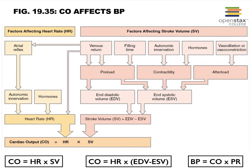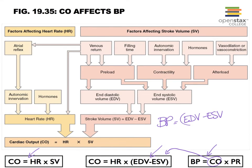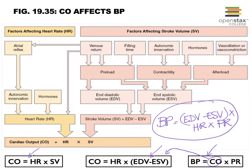Remember from our discussion of the heart that cardiac output is a product of stroke volume and heart rate. We can then tease apart stroke volume, which is the difference between end diastolic and end systolic volume, and add that into our definition of cardiac output. Remember that blood pressure is the product of cardiac output and peripheral resistance. You can then replace cardiac output with this formula, so blood pressure equals (EDV minus ESV) — which is your stroke volume — times heart rate, times peripheral resistance. This is your detailed formula for blood pressure, which you really should memorize.